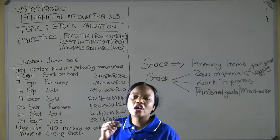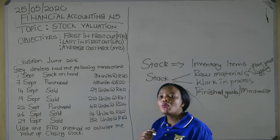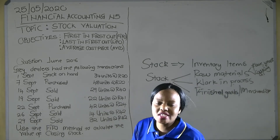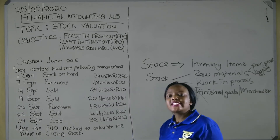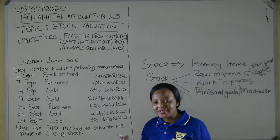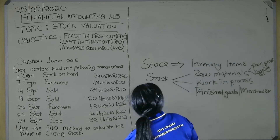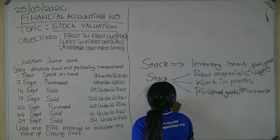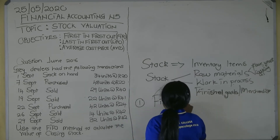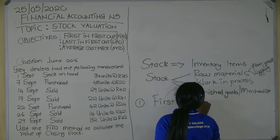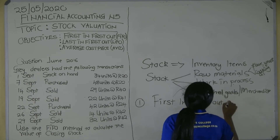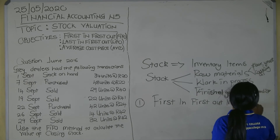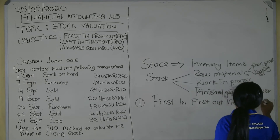Accounting works with rules and principles, and one of the rules is the valuing of closing stock. We have three methods adopted when valuing closing stock. The first method is the First In, First Out method, which we know as FIFO.